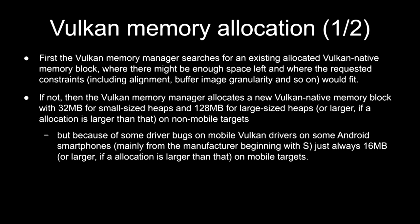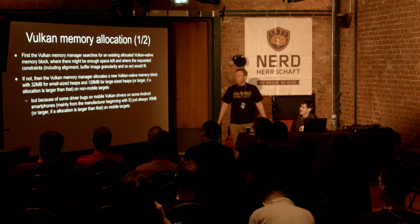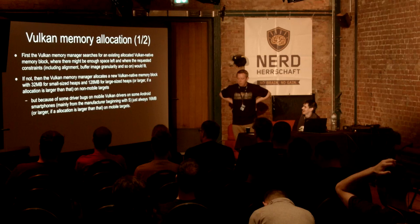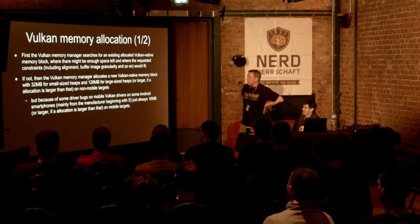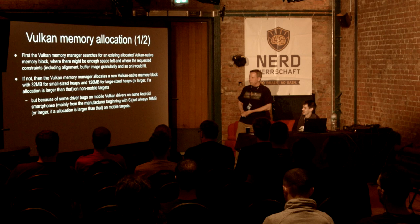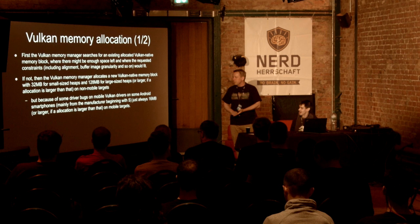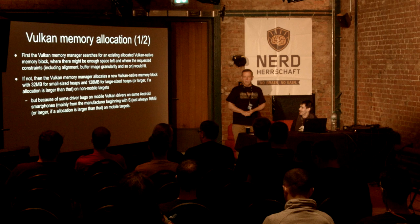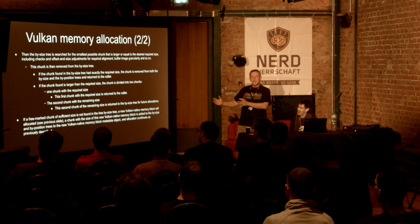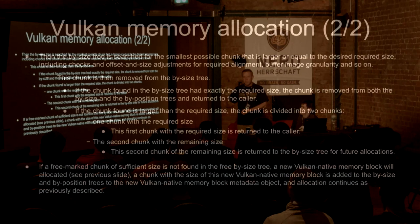How does Vulkan memory allocation work? In general, it's a really flexible solution which tries to allocate memory blocks as needed, running its own heap with different block sizes. Depending on the platform, of course it's buggy. There's an example from an Android manufacturer — not to be named Samsung. The text on the slides becomes smaller and smaller — it's a challenge. The memory management uses a tree, or actually two trees, to manage and find memory blocks.